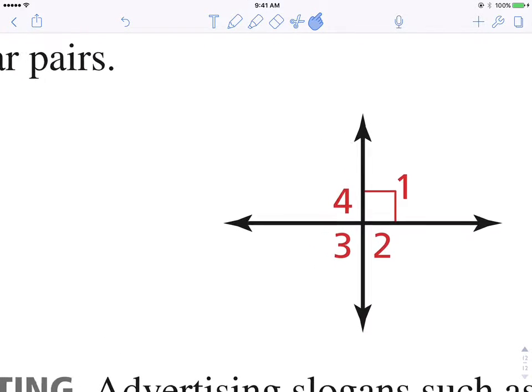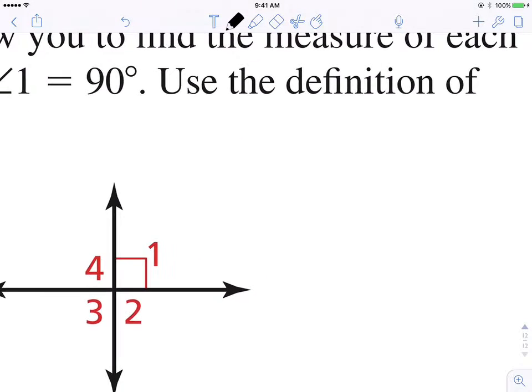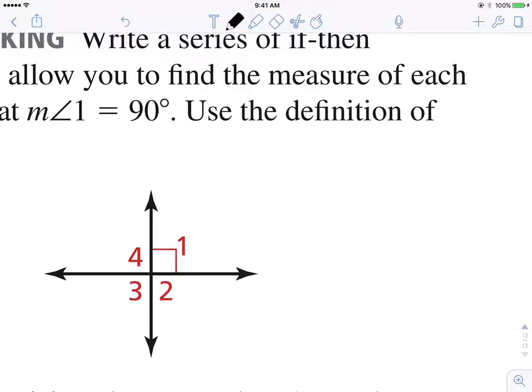So take a look at this diagram. Use the definition of linear pairs. What that means is that the sum of the two angles must equal 180 degrees. The sum of the two angles that are linear pairs must be 180 degrees.